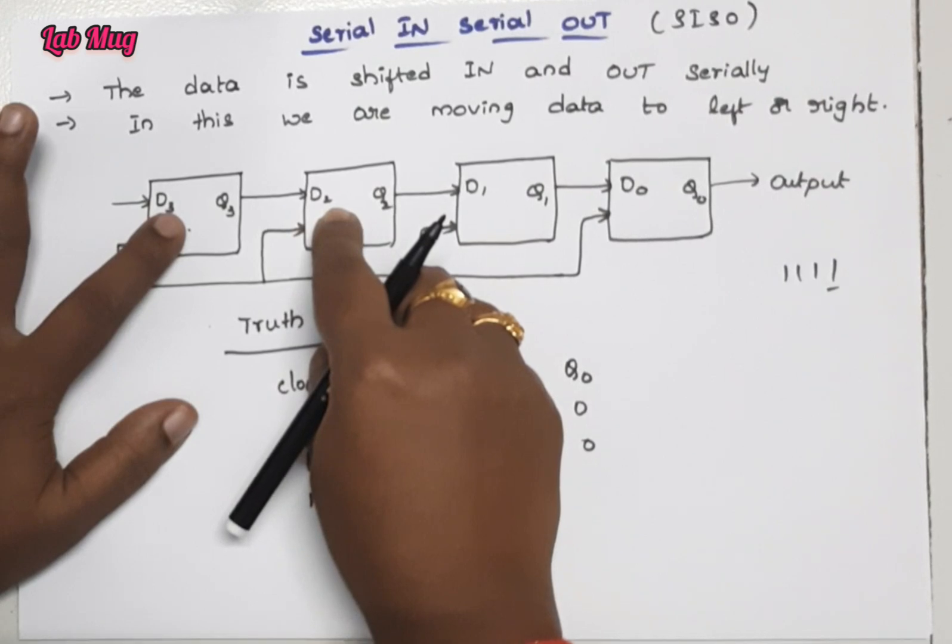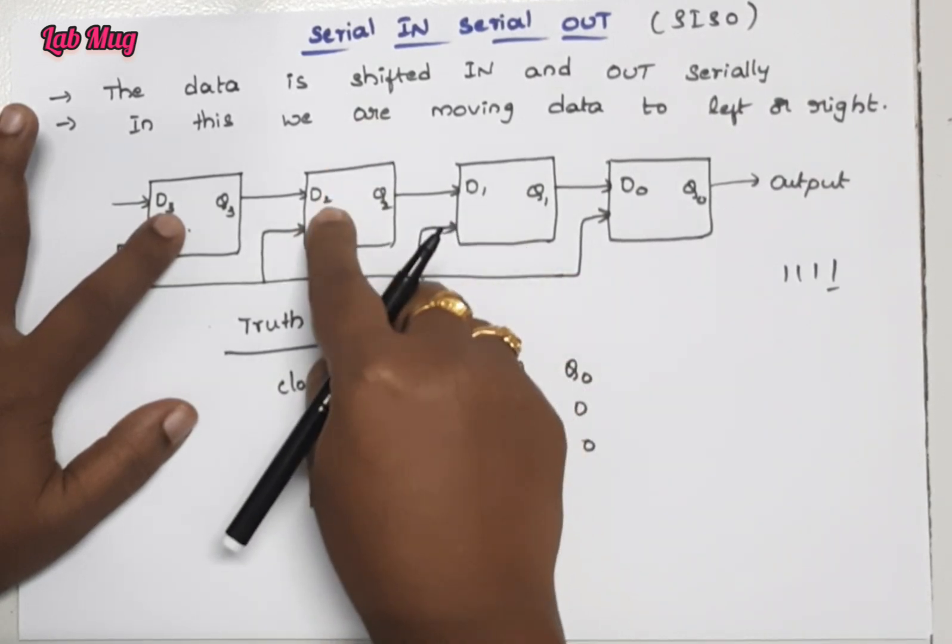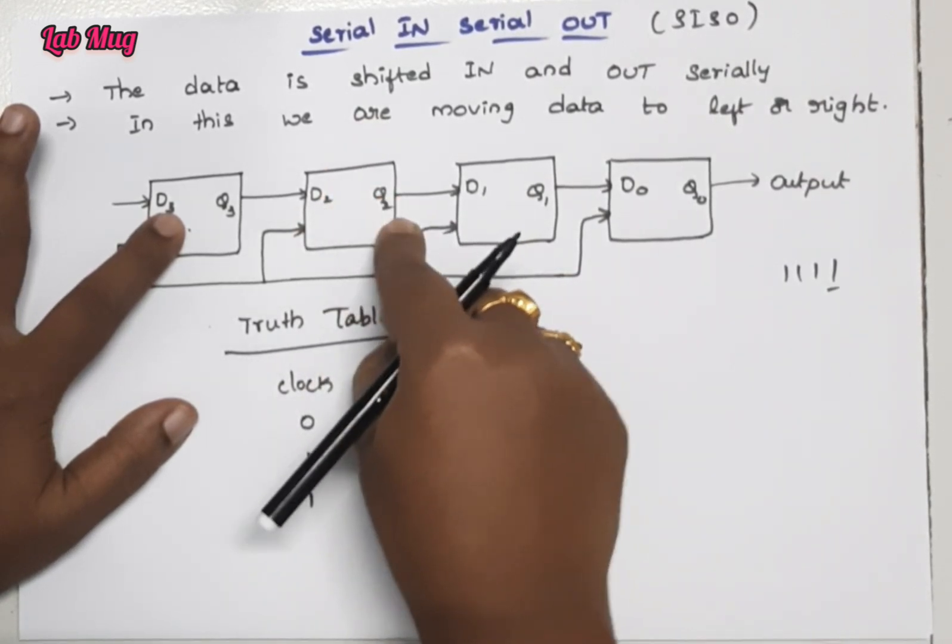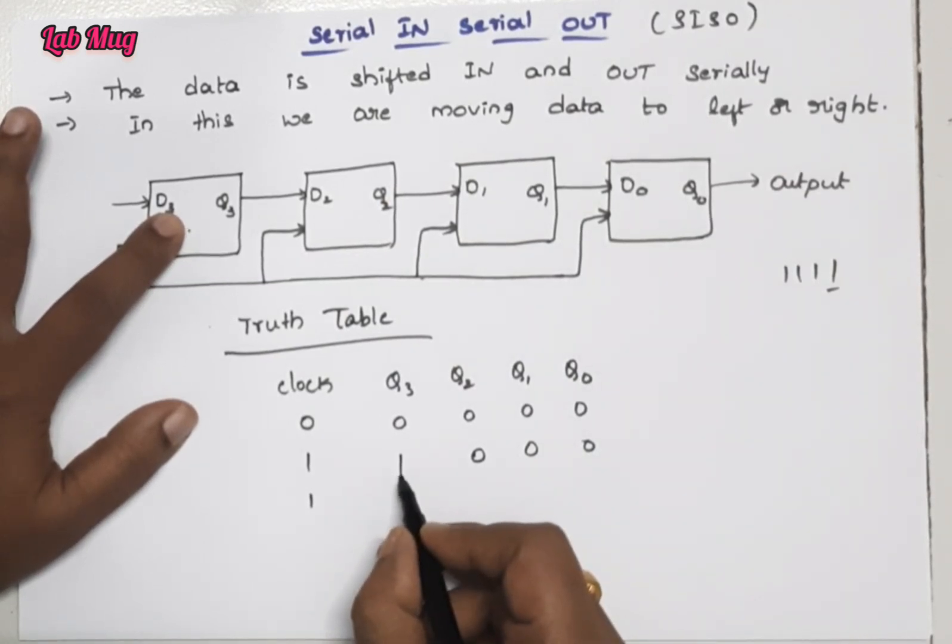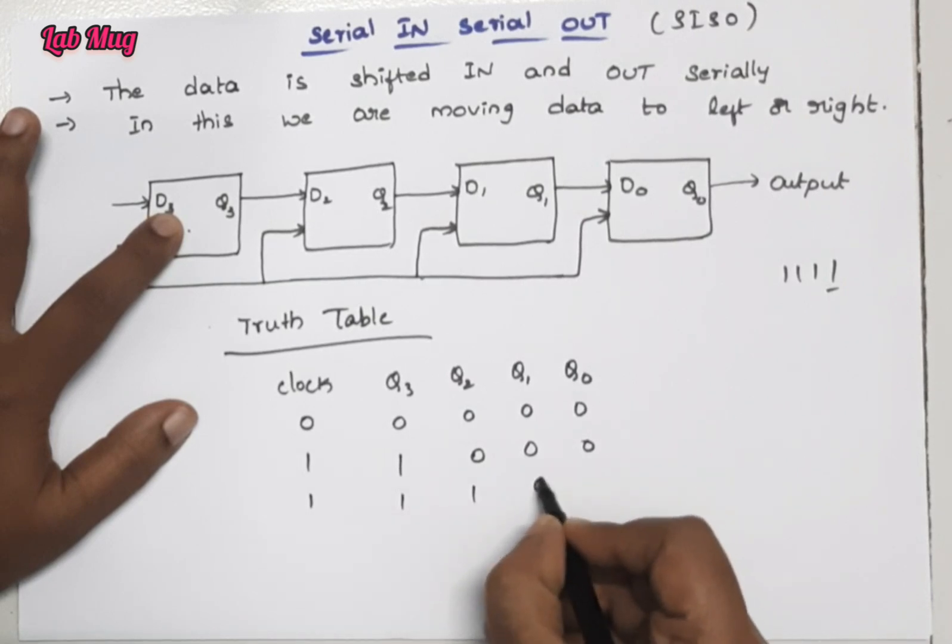When the D2 value is one, the Q2 value is one. So here this one value is passing to Q2. That is one one zero zero.